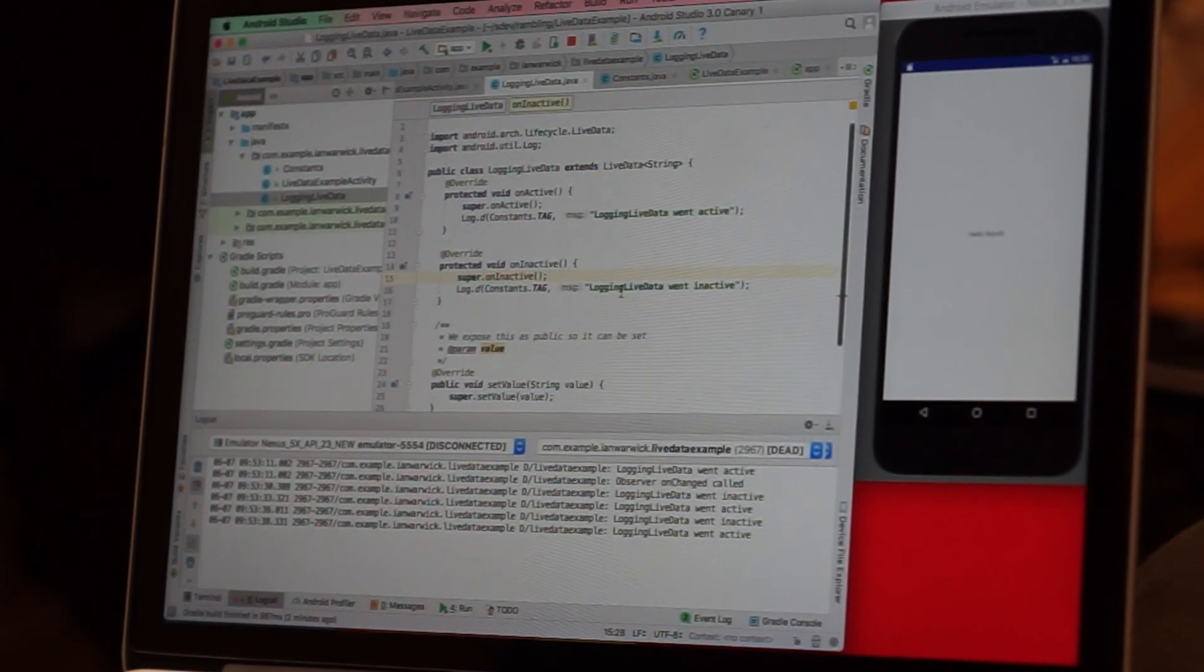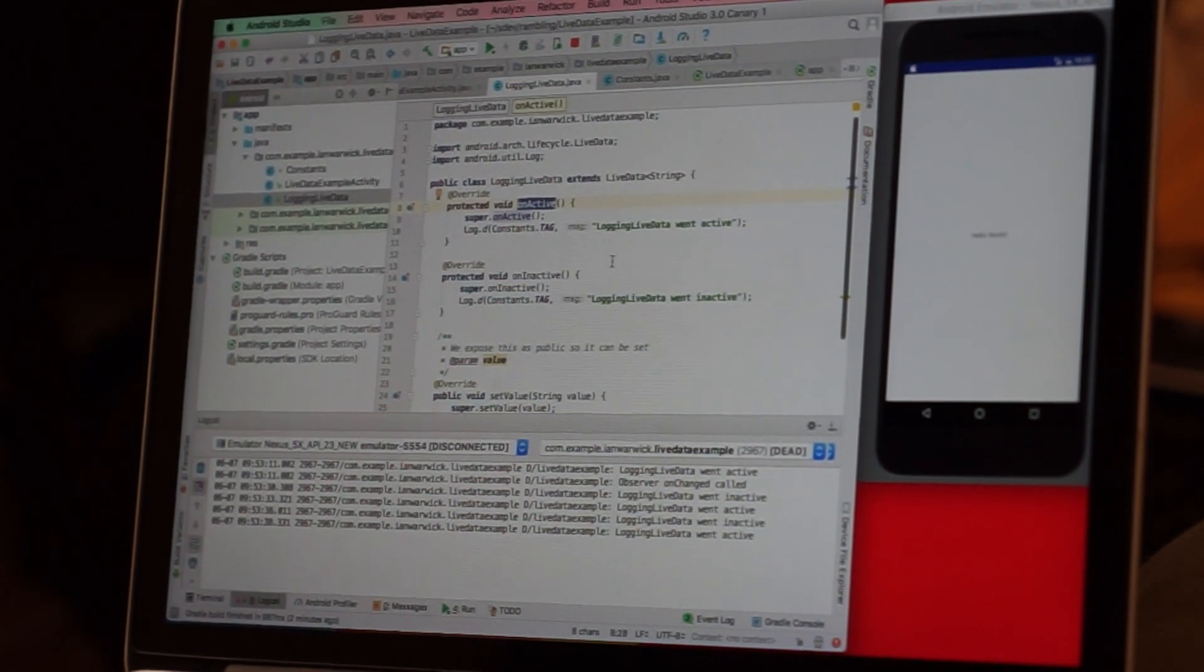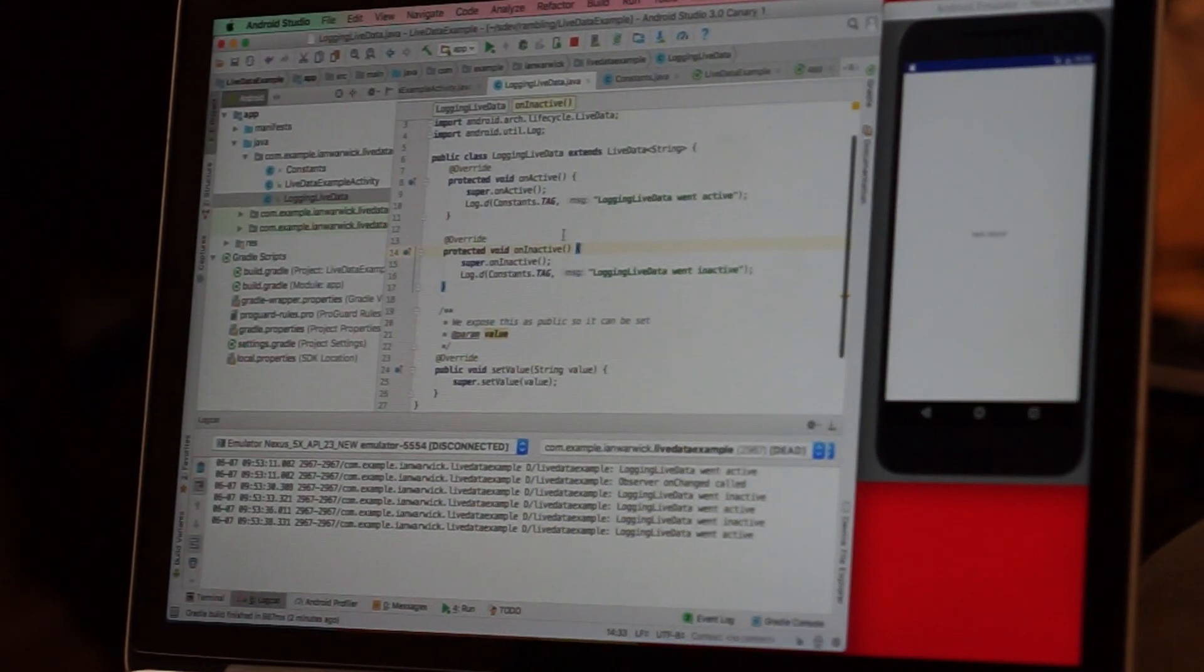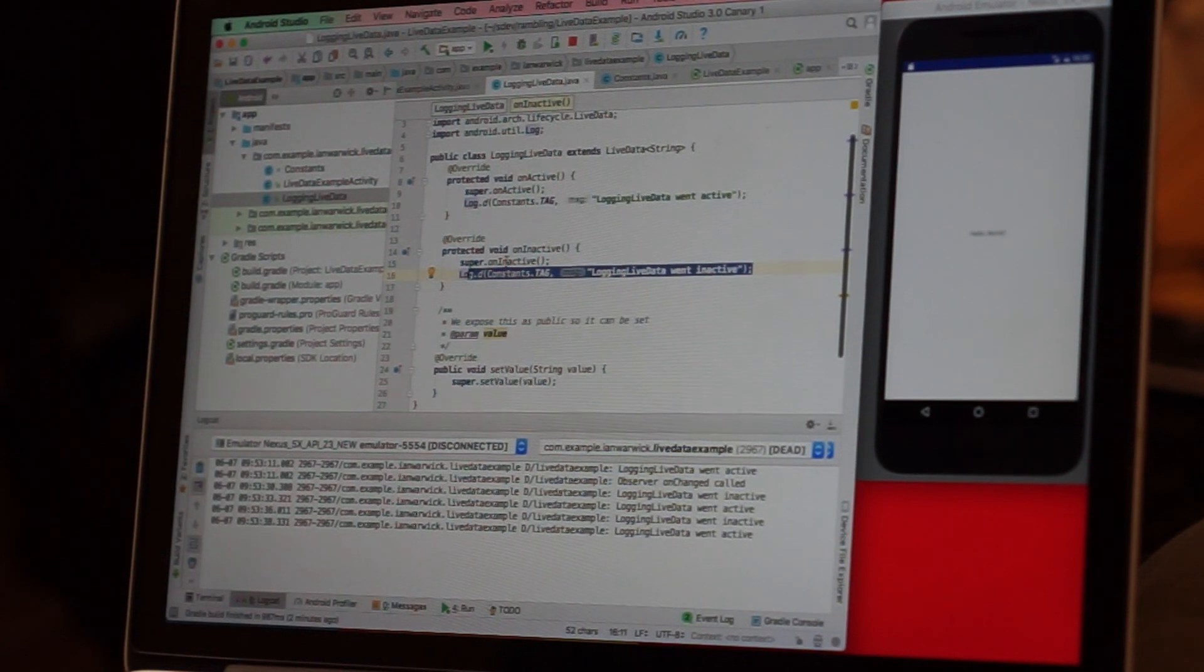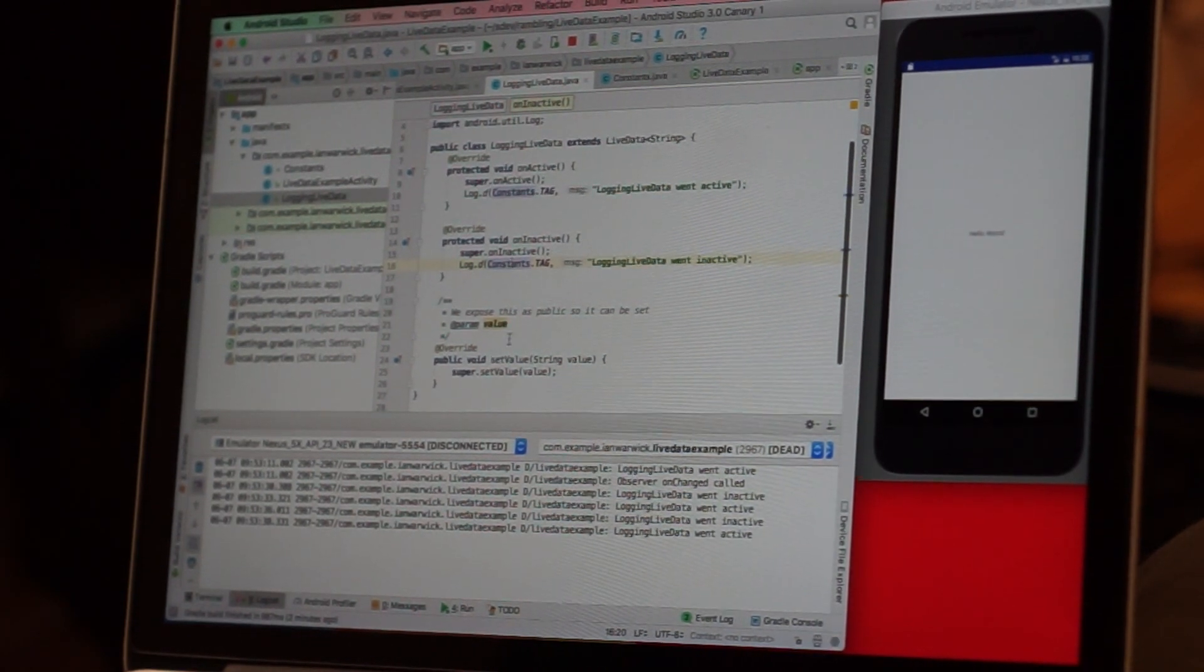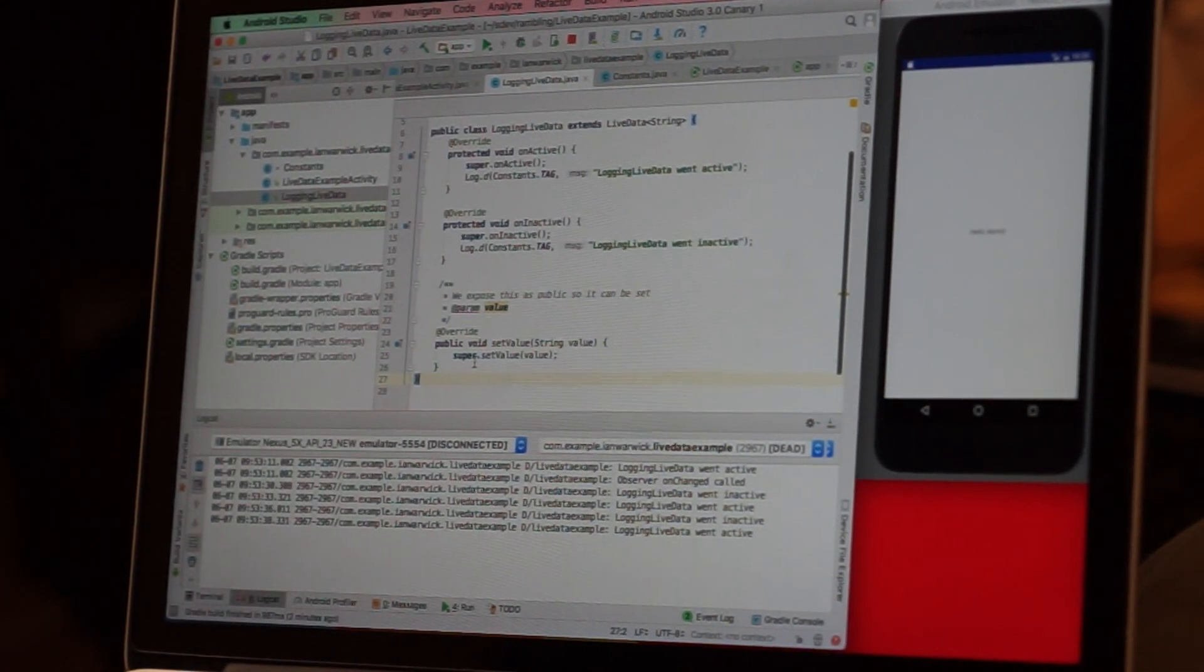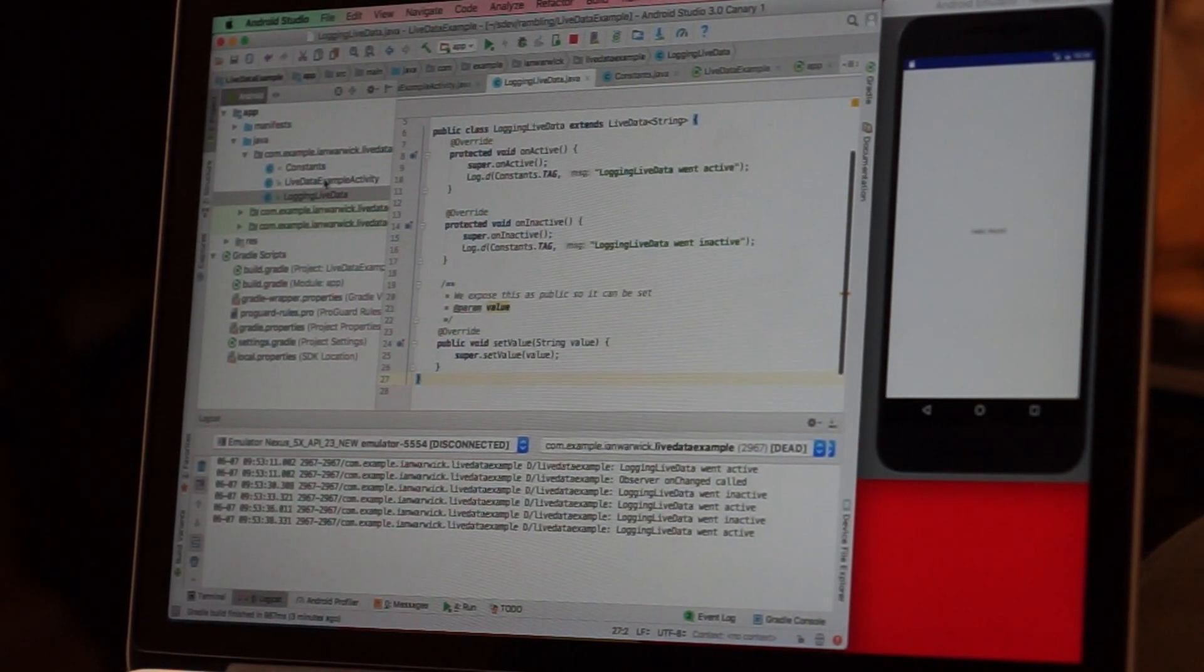Going to my logging LiveData example, I have this custom implementation which I have overridden the onActive method and I'm just going to log this saying logging LiveData when active. I've overridden the inactive method and I'm going to log this logging LiveData when inactive. I've overridden the setValue method in this custom implementation because LiveData doesn't expose setValue, it's actually marked as protected. By setting it public it means that I'm able to show you in my example how setting a value will trigger an observer.